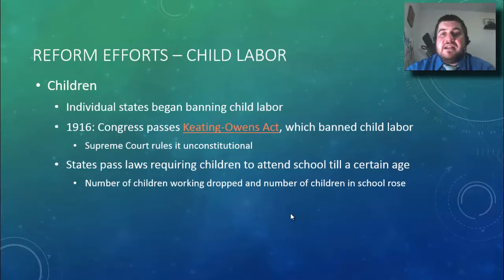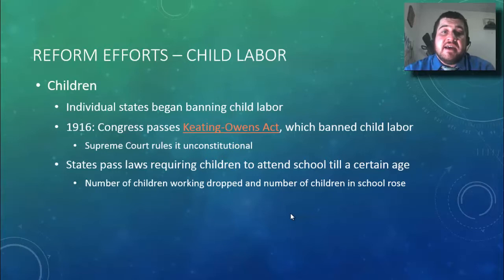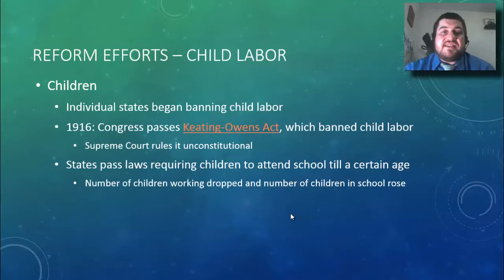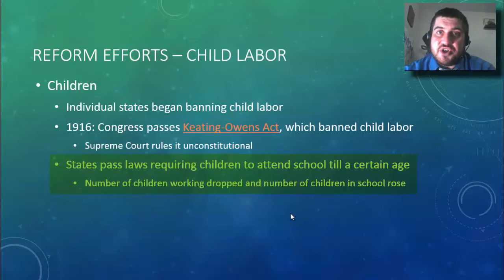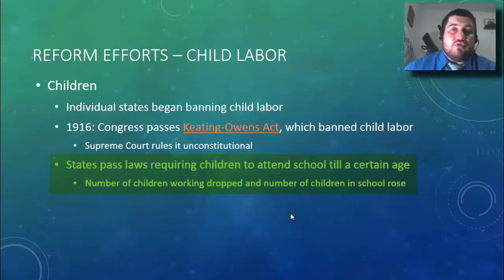Individual states began banning child labor, and in 1916 Congress passed the Keating-Owen Act banning child labor, but it was declared unconstitutional by the Supreme Court — they said if a family wants their kids to work, the government shouldn't stop them. Instead, states took a backdoor route and passed laws requiring children to attend school until a certain age, which is what we have today. The number of children working dropped dramatically while school enrollment rose.